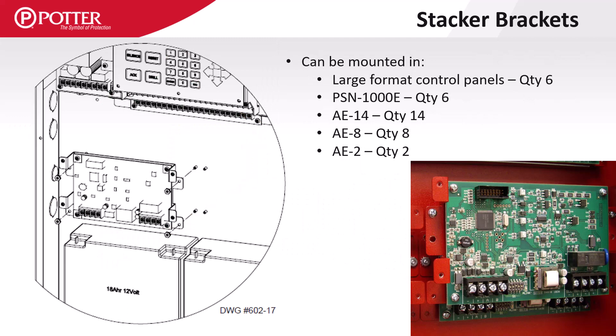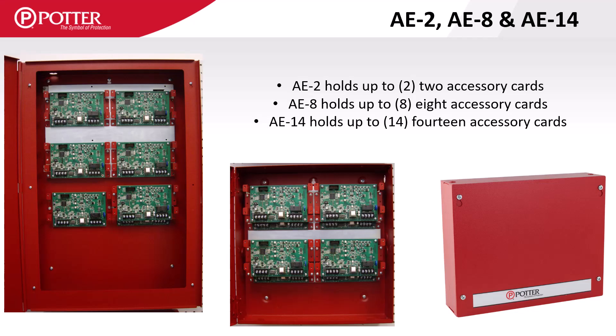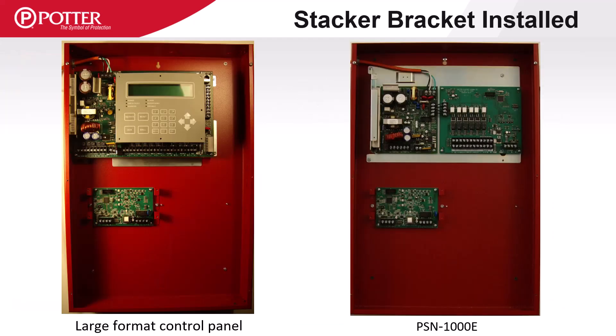The stacker bracket cards can be installed in large format control panels, the PSN-1000E power supply, and in AE P-Link module expansion enclosures. There are several accessory card enclosures available for mounting P-Link accessory cards: the AE-14 can house a total of 14 P-Link cards, the AE-8 can house eight, and the AE-2 holds two cards. The large format panels and PSN-1000E enclosures can both hold six stacker bracket accessory cards by installing them two side-by-side and three deep.